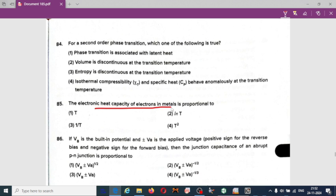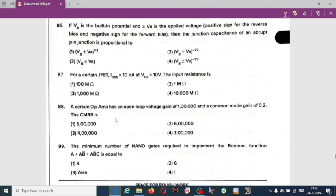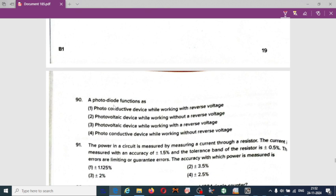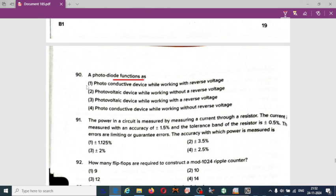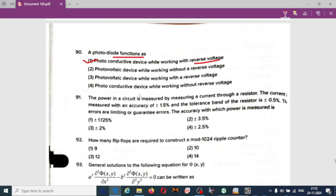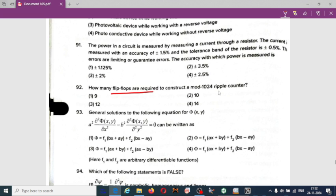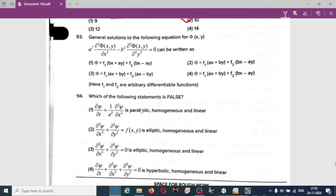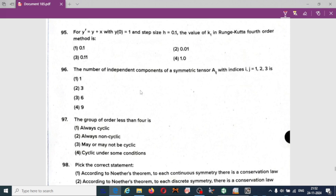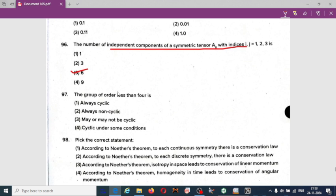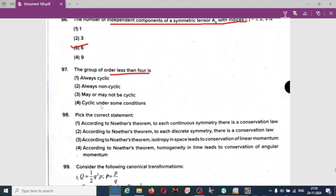The electronic heat capacity of electrons in metal is proportional to option one, temperature. Number of independent components of symmetric tensor Aij is 6. There are 6 number of independent components of symmetric tensor. A group of order less than 4 is always cyclic, which is not correct. So option two may be the answer: always non-cyclic.